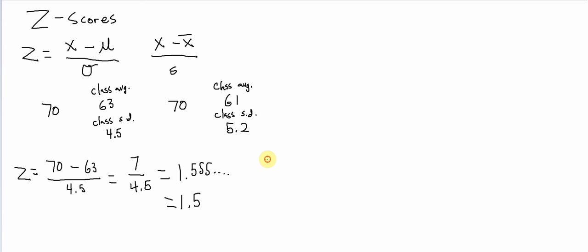Student B, on the other hand, I'll just label them as A and B just for difference. Their Z score, their Z score again, it's X, their value, right? Their grade 70 minus the average, which is 61 divided by the standard deviation, which is 5.2.